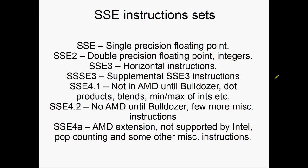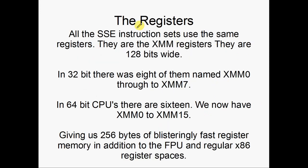That's all seven of the SSE instruction sets. Now, the registers — all of these instruction sets use exactly the same registers: the XMM registers, or SSE registers, all 128 bits wide. In 32-bit days there were eight of them, named XMM0 through XMM7. In 64-bit CPUs this has been increased to 16, XMM0 through XMM15, giving us 256 bytes of very fast register memory on the CPU.